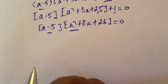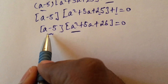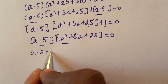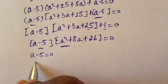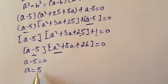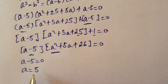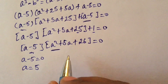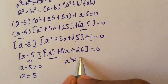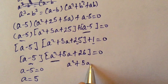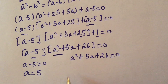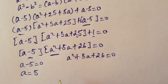We now have two cases. In the first case, a minus 5 equals 0, giving a equals 5. This is the first real root of the equation. In the second case, a squared plus 5a plus 26 equals 0, and we will apply the discriminant.